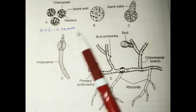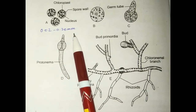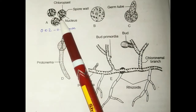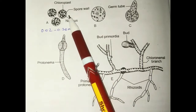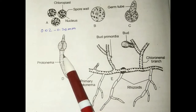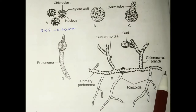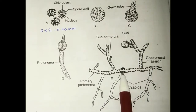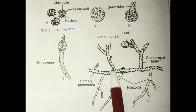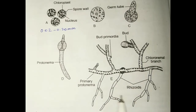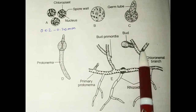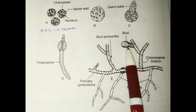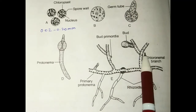Now we are going to study the germination of spores. The spores are 0.02 mm to 0.20 mm in size and are uninucleated. They have their own chloroplast. They will develop a protonema — this will be the primary protonema. The primary protonema cells divide in both planes. Cells divided on the upper plane have chlorophyll, and cells on the lower plane do not have chlorophyll.